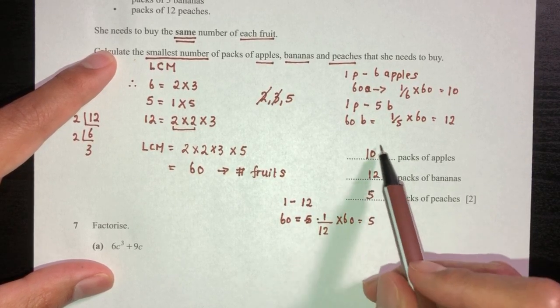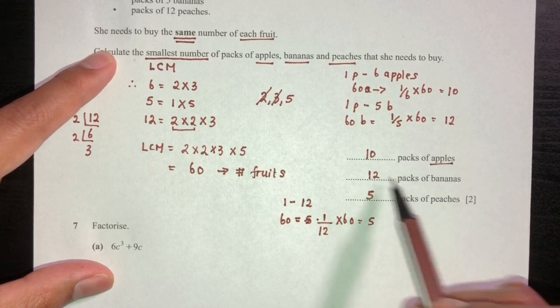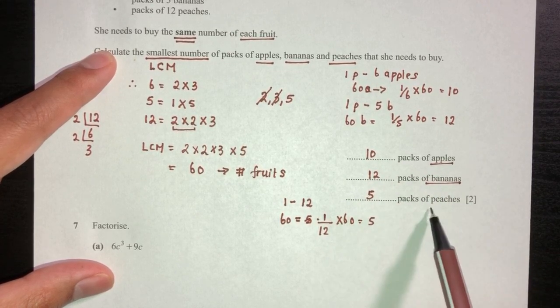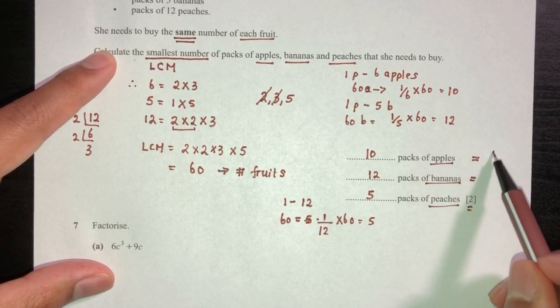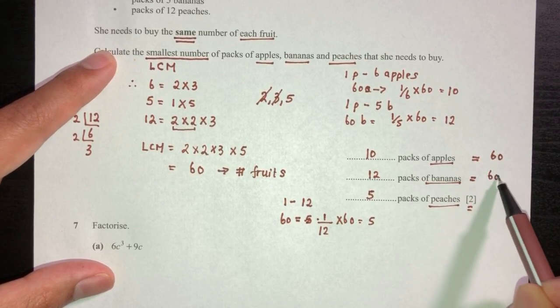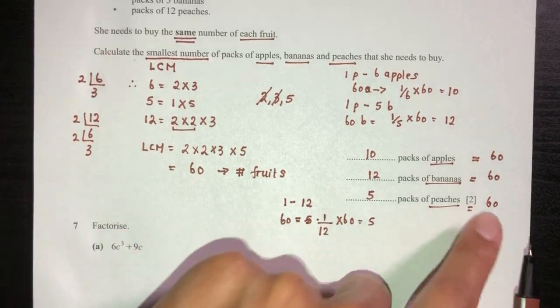So she will be buying ten packs of apples, twelve packs of bananas, and five packs of peaches. But in total she will have the same number of fruits which is sixty, sixty, and sixty. And this is what you want here, but the packs is ten, twelve, and five.